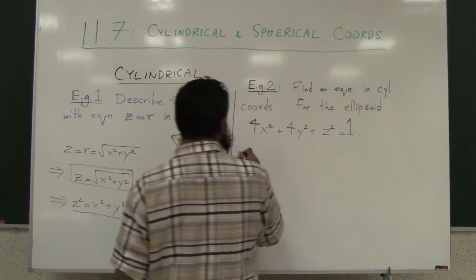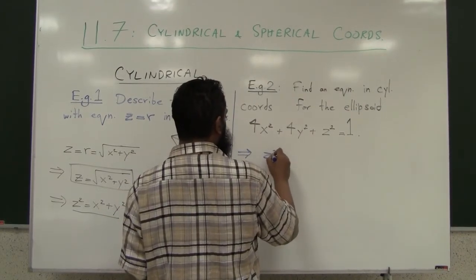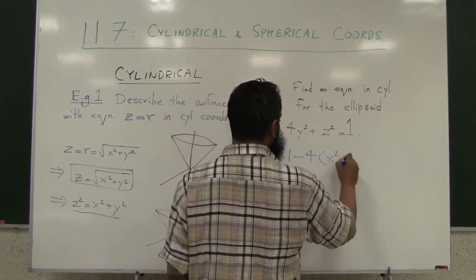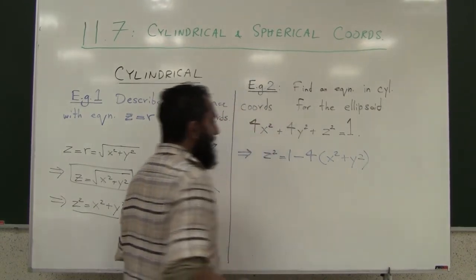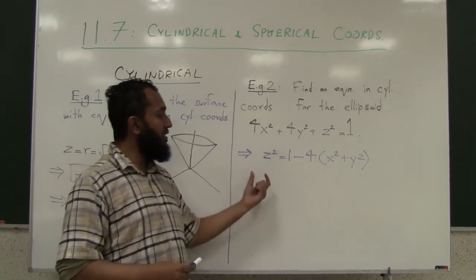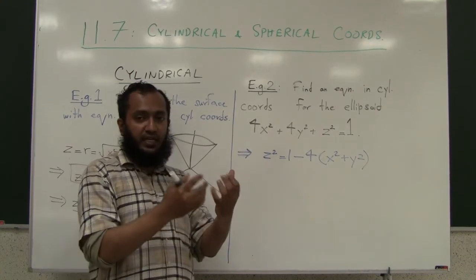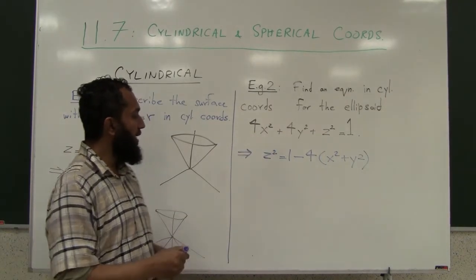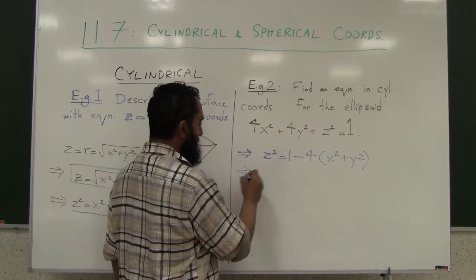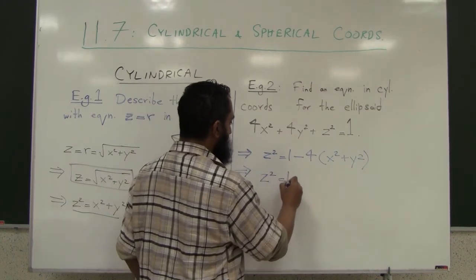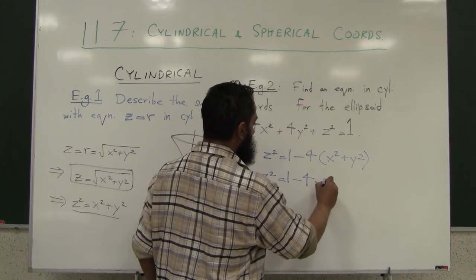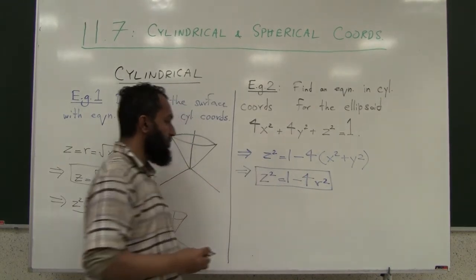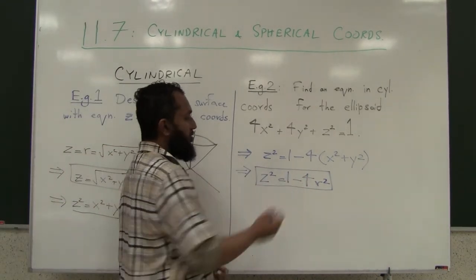Let's see how we can work with this. We have z squared equals one minus four times quantity x squared plus y squared. When you're trying to go from rectangular coordinates to cylindrical, you're always trying to see if you can get that x squared plus y squared out so that you can replace it with r squared. I move the things over and then what can I do here? Z squared equals one minus four r squared.